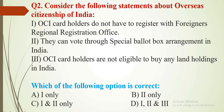Question number 2. Consider the following statements about Overseas Citizenship of India (OCI). Statement 1: OCI card holders do not have to register with the Foreigners Regional Registration Office. Statement 2: They can vote through a special ballot box arrangement in India. Statement 3: OCI card holders are not eligible to buy any land holdings in India. Choose the correct option.